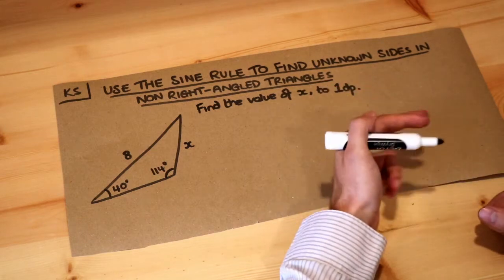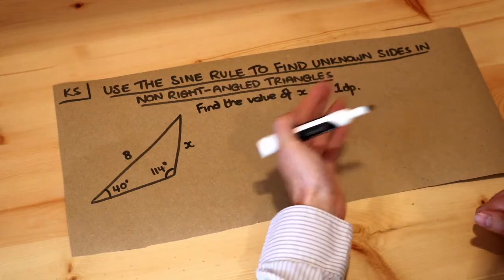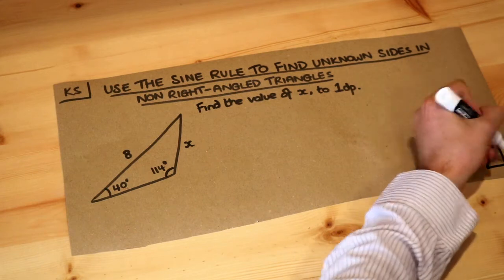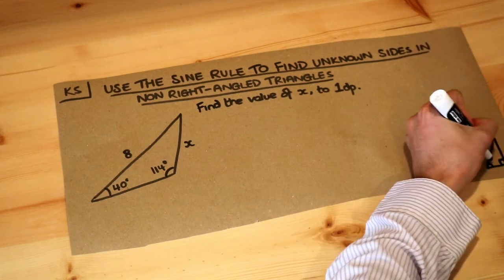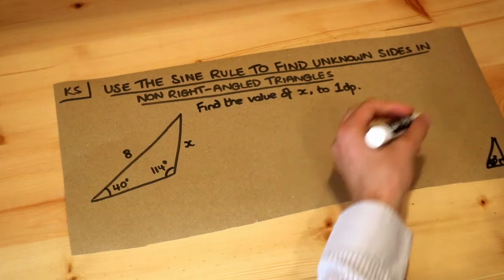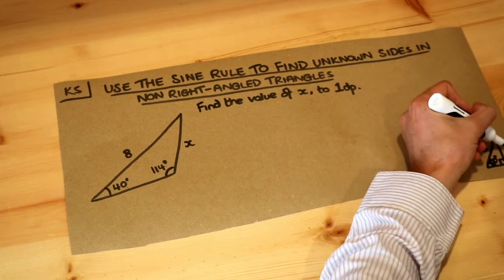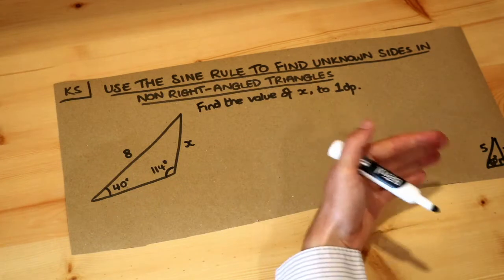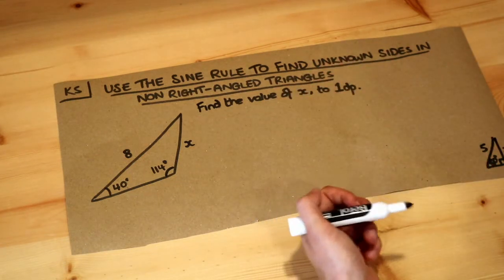Hopefully you've watched my previous videos or encountered trigonometry with right-angled triangles. For example, we might have an angle like 60 degrees and one of the lengths, say five, and you're trying to find one of the other lengths. We use something called SOHCAHTOA, so sine of theta is opposite over hypotenuse, etc.